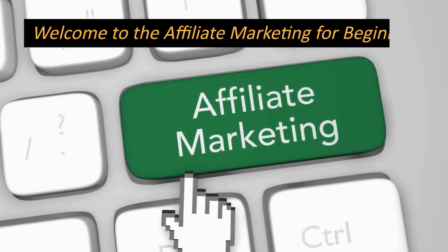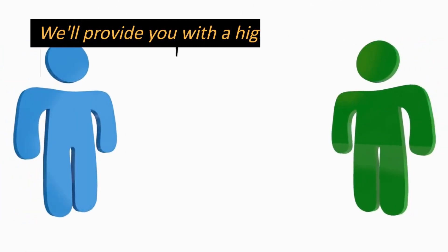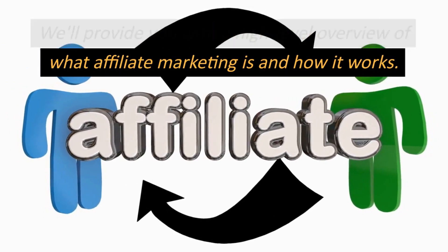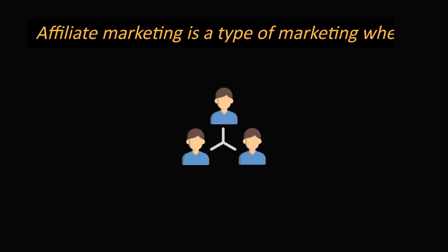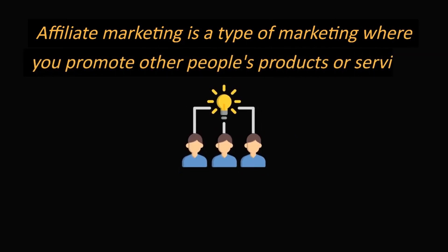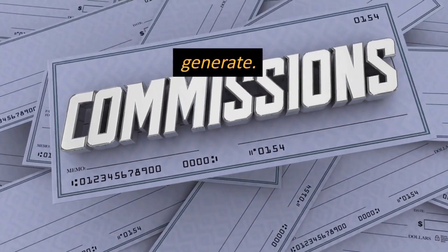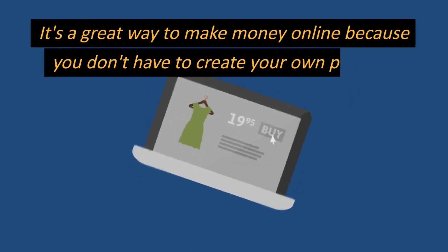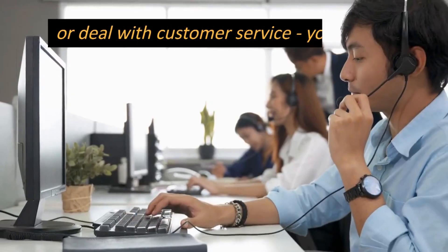Welcome to the Affiliate Marketing for Beginners video course. We'll provide you with a high-level overview of what affiliate marketing is and how it works. Affiliate marketing is a type of marketing where you promote other people's products or services and earn a commission for every sale that you generate. It's a great way to make money online because you don't have to create your own products or deal with customer service.